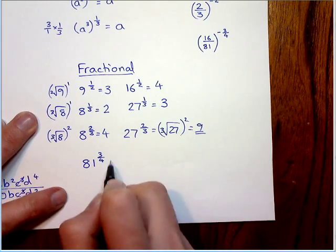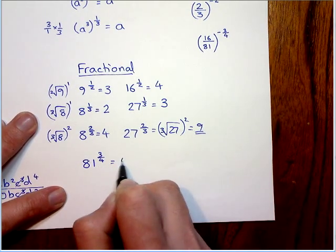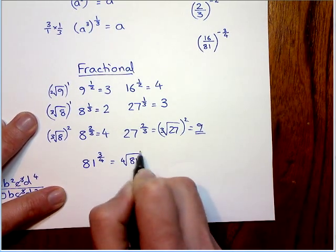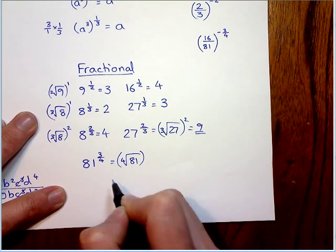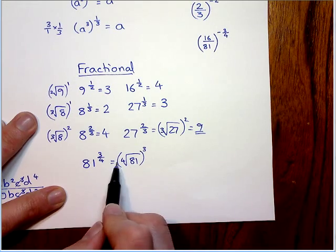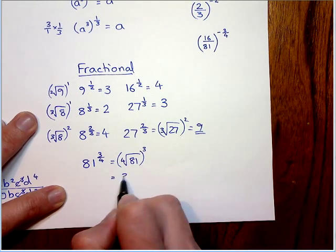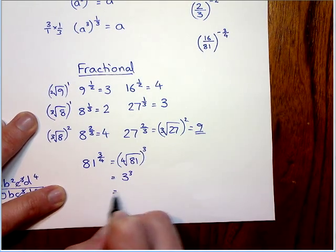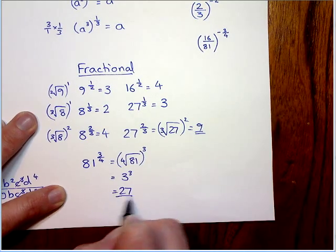So this one's a little bit harder because there's a fourth root. And if you don't know how to do that, you simply square root and then square root again. So the square root of 81 is 9. Square root of that again is 3. This is the same thing. 3 times 3 times 3 is 27.